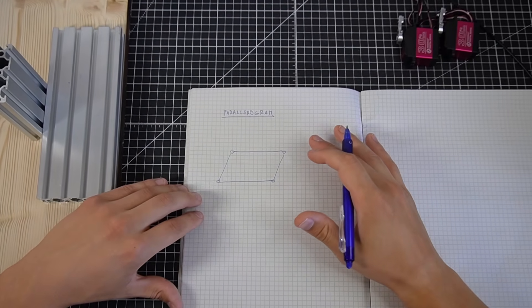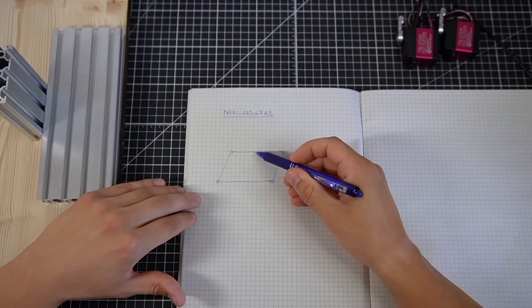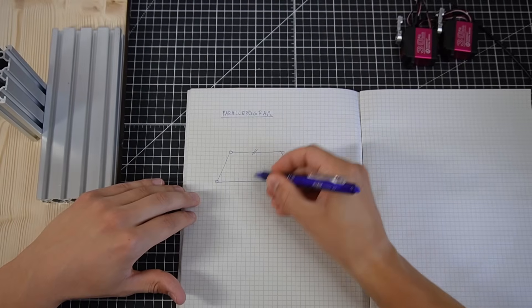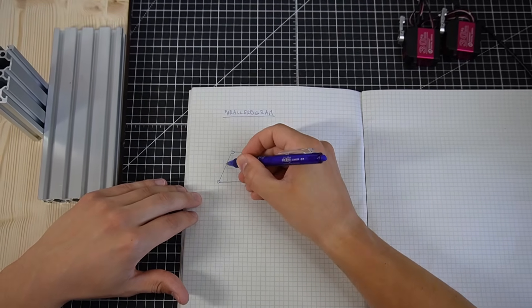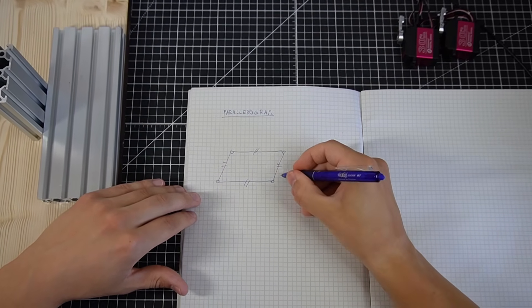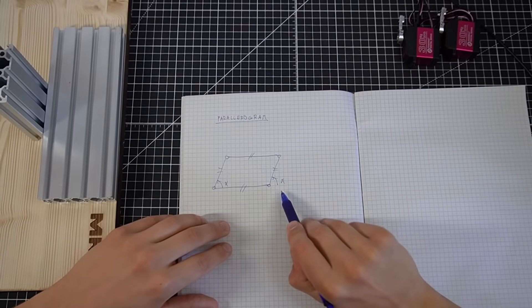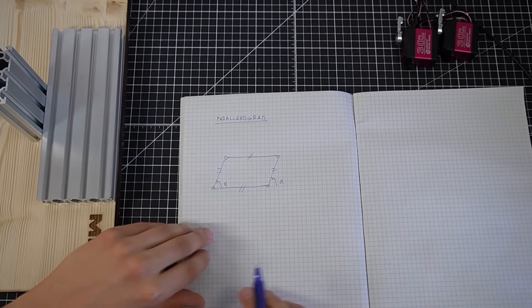This is a parallelogram. It's a four-bar linkage where opposite sides have the same length and are parallel to each other. So these two sides are parallel and these two sides are parallel. This means that if you set this angle, the opposite side is just gonna copy it. This property is gonna be useful for our leg design.